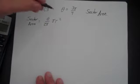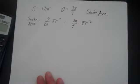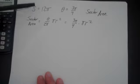we get sector area is equal to theta over 2 pi times pi r squared. We have theta, that's fine, that's 3 pi over 4 times pi r squared, but we notice we don't have r. So if we had area, we could find it, but we don't, but we do have arc length.